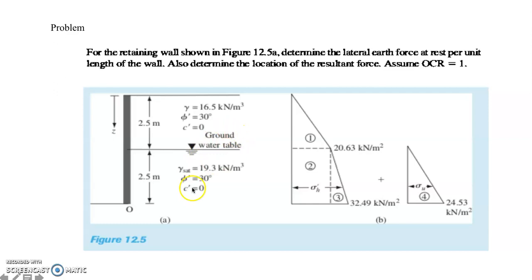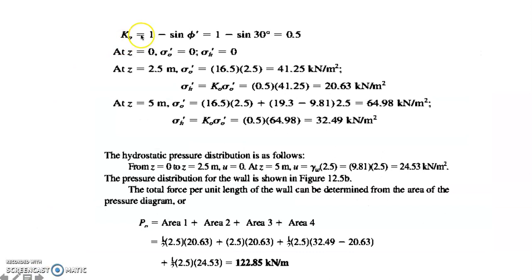We're going to assume that the over-consolidation ratio is equal to 1. This is the illustration for our retaining wall, and there is a water table. For the lateral earth pressure coefficient, we are given K₀ which is equal to 1 minus sine φ'. Substituting the value for the angle of friction gives us K₀ = 0.5.